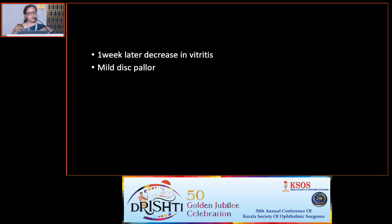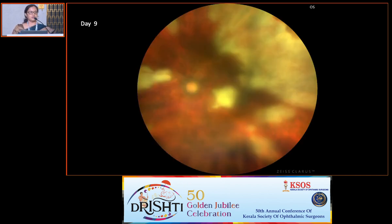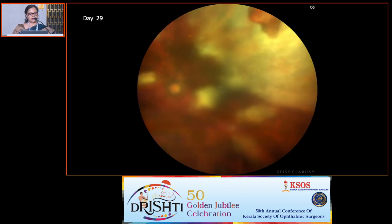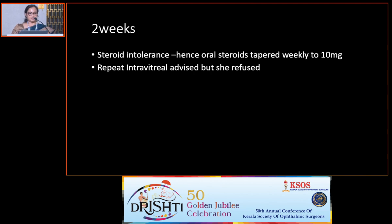One week later, vitreitis had reduced, the disc could be seen — more pale — retinitis patches visible with more defined edges, though there was a large lesion at the macula. After two weeks she came back and we gave a repeat intravitreal clindamycin and dexamethasone injection. Two weeks after the second dose, she returned with severe steroid intolerance. We tapered oral steroids to 10 mg and asked her to continue Bactrim DS. She refused a repeat injection.